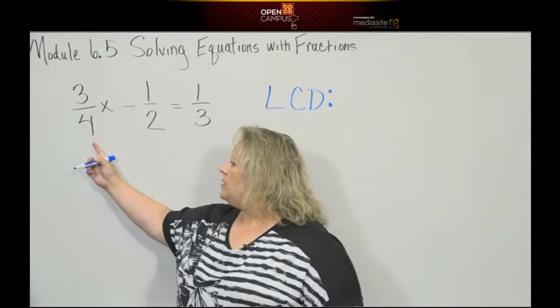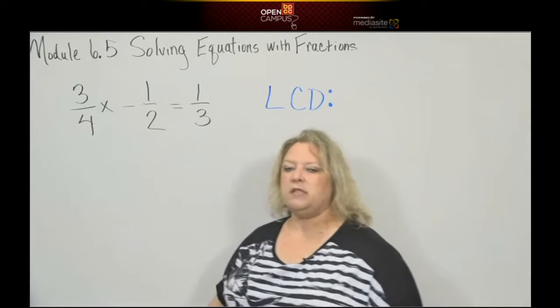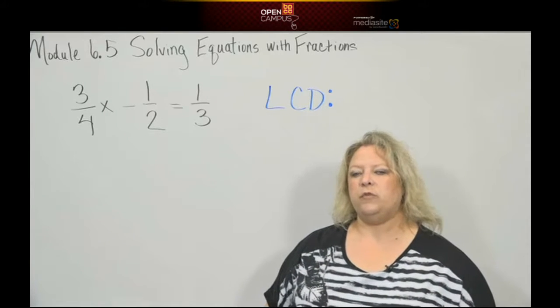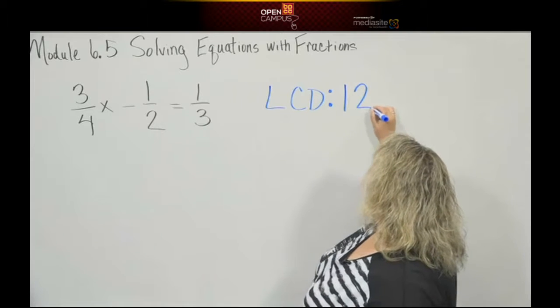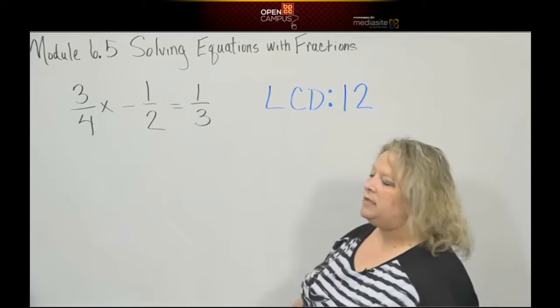How do I do that? The least common denominator is the smallest number that four, two, and three will divide into evenly, so that's twelve. All three of those divide into twelve.